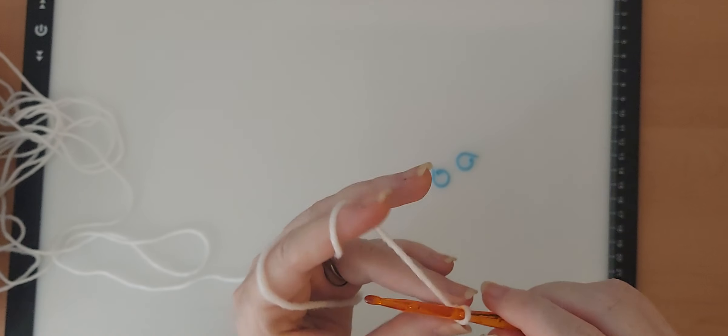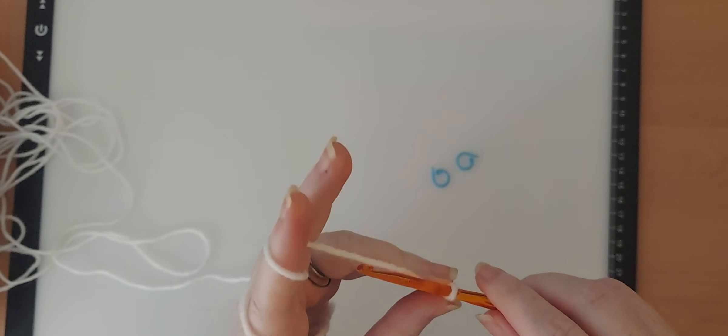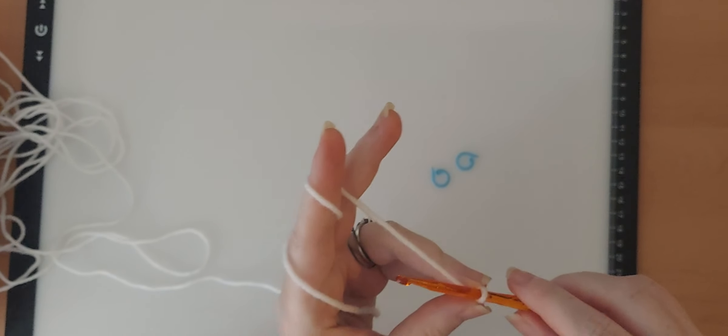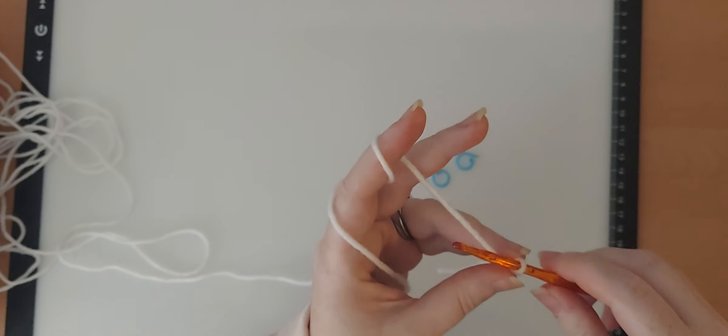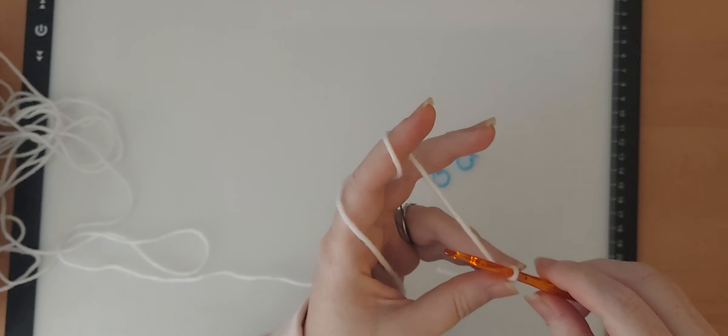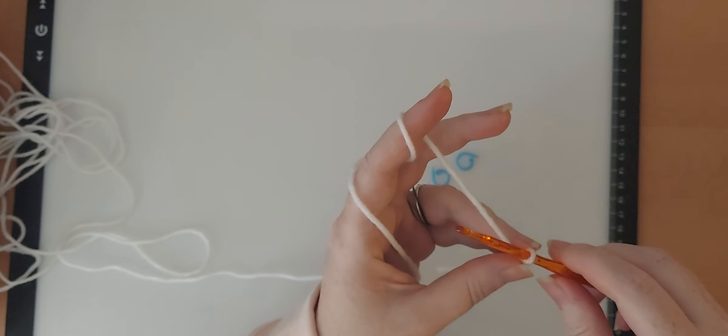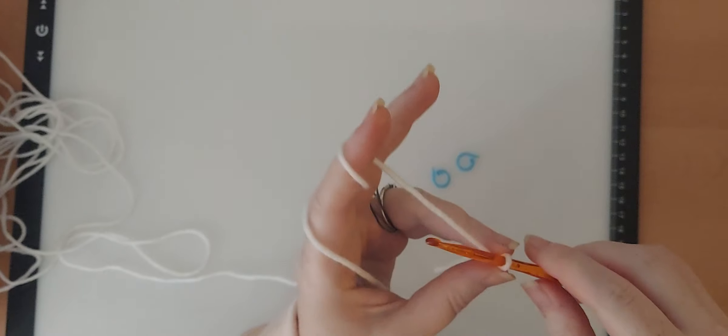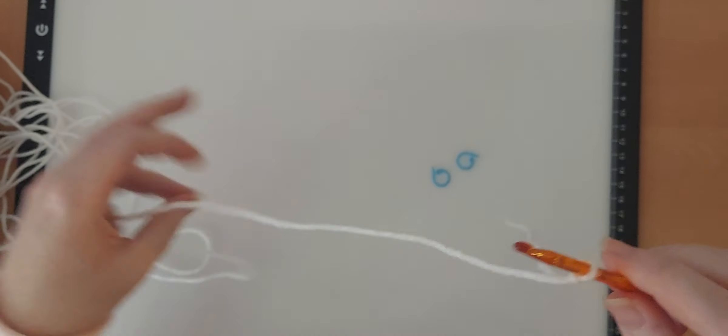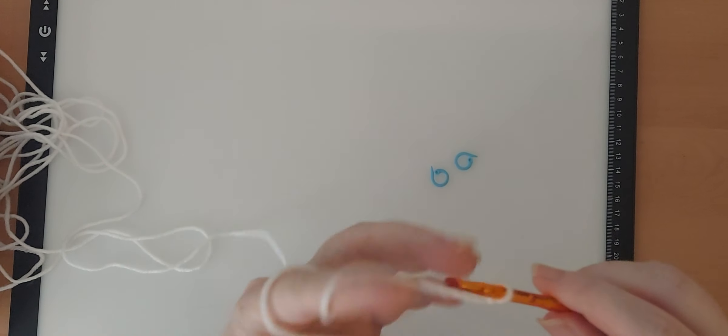We have our slipknot, and in the beginning of the last pattern that we worked on, which was a single crochet washcloth, the instructions said to chain 25. So I'm going to show you guys how to chain.